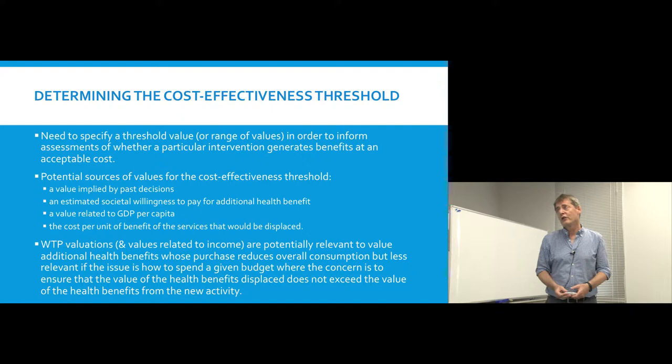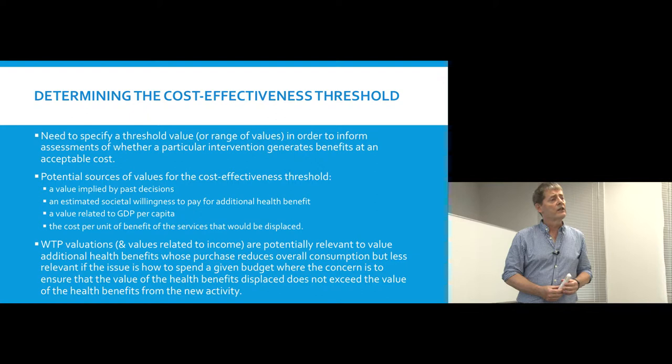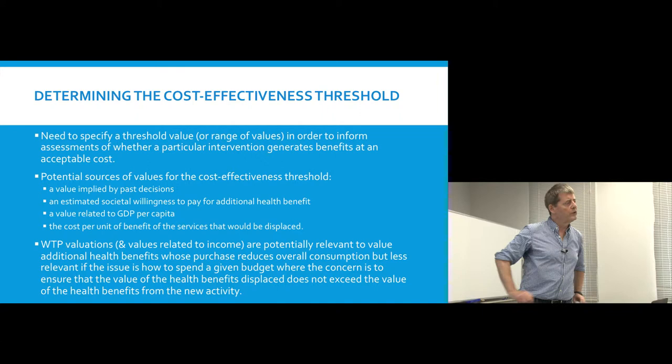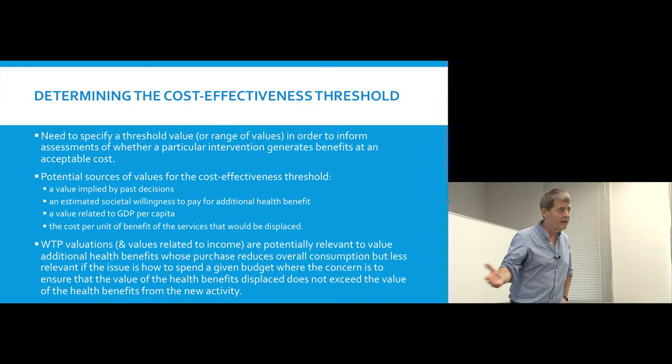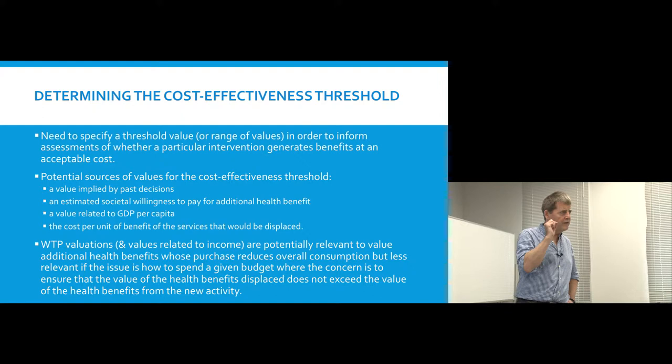There are a number of potential sources for the cost-effectiveness threshold. One approach that's been suggested is to look at past decisions and ask what value is implied by them. If we look at the things we've previously said yes or no to and examine their cost effectiveness — their cost per QALY gained — could that imply a threshold?